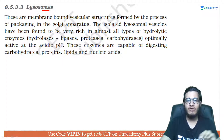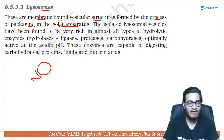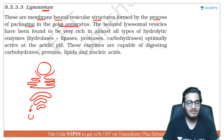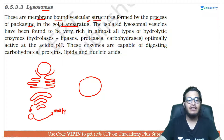तो lysosome की बात कर लेते हैं। ER और Golgi complex की हम लोग बात कर चुके हैं, अब lysosome की बारी है। So these are membrane-bound vesicular structures formed by the process of packaging in Golgi apparatus। यानि सबसे पहले आपका nucleus present था, nucleus की outer membrane के साथ continuation में आपका endoplasmic reticulum था। ER के just बाद आपका Golgi complex present था। Golgi का काम packaging का और चीजों को आगे transfer करने का है। यहाँ से जब membranous vesicle निकलेगी, तो वो modify होकर lysosome बना लेती है।